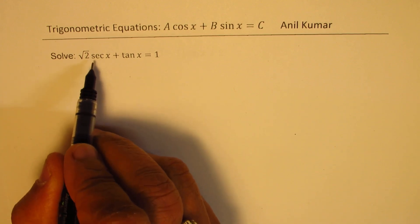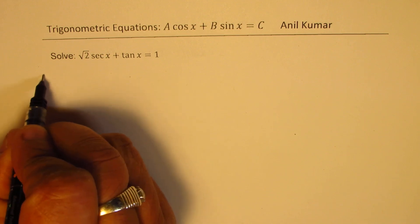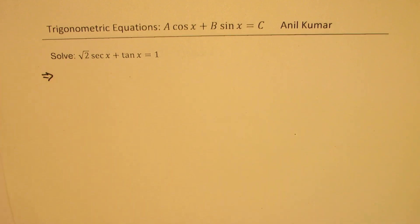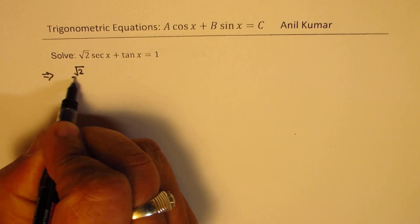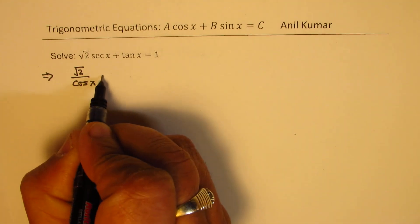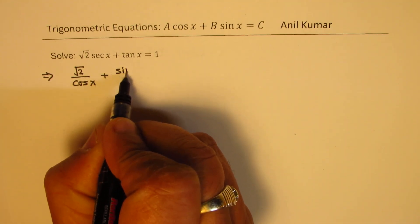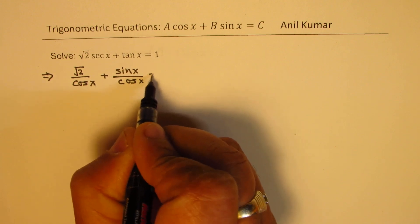Now secant x is 1 over cos x, so I could write this equation as square root 2 over cos x and tan is sine x over cos x equals to 1.